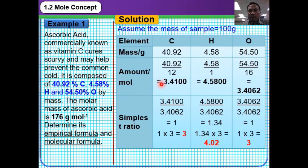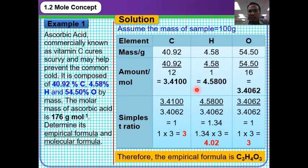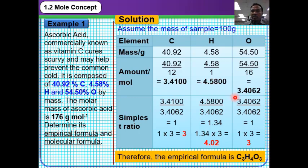After that, we calculate the number of moles for carbon, hydrogen, and oxygen by dividing the mass of each element with their molar mass, and we obtain the number of moles of carbon as 3.41, hydrogen 4.58 moles, and oxygen 3.4062 moles.